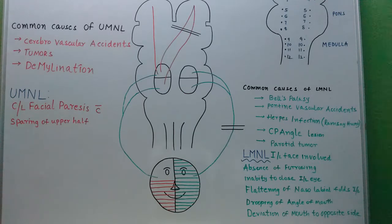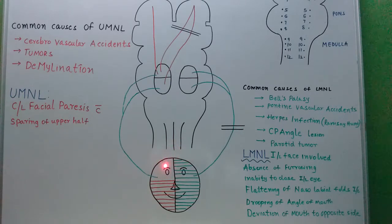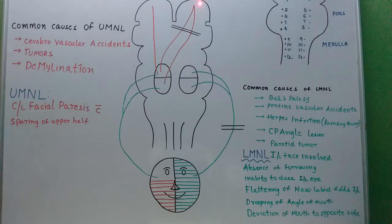In case of an upper motor neuron lesion, both the upper half and lower half of the nucleus are affected. The lower half is paralyzed — specifically the contralateral lower half of the face. But the upper half is spared because the nucleus is also getting ipsilateral cortical representation. This bicortical representation of the upper half is the reason why there is contralateral facial paresis with sparing of the upper half.